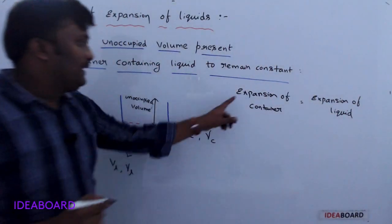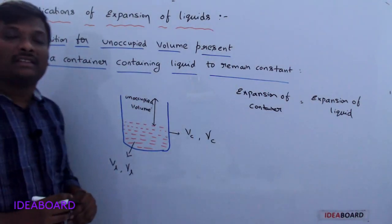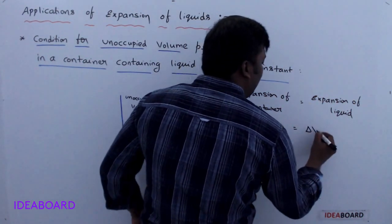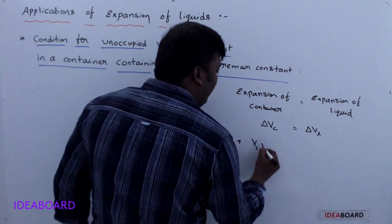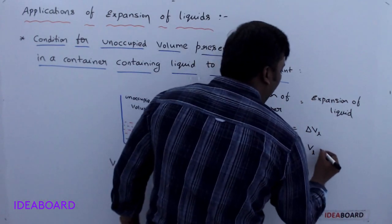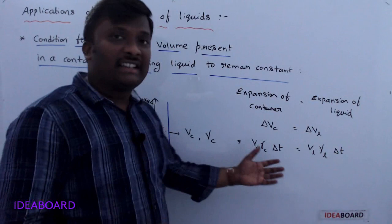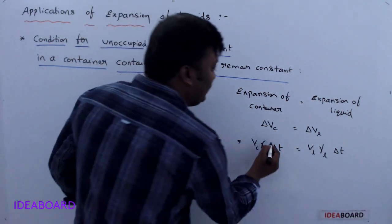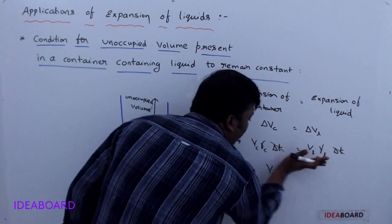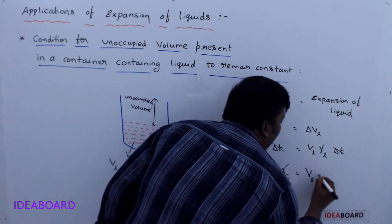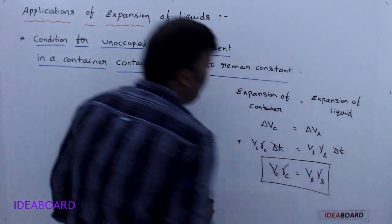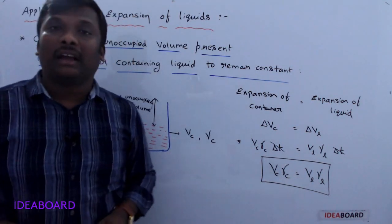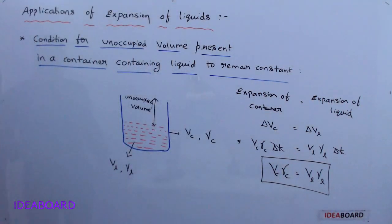Setting delta Vc equal to delta Vl and canceling delta T, we get the condition: Vc · gamma C = Vl · gamma L. So the condition for the unoccupied volume to remain constant is Vc · gamma C = Vl · gamma L. This is the first application.